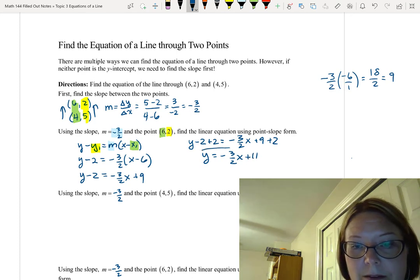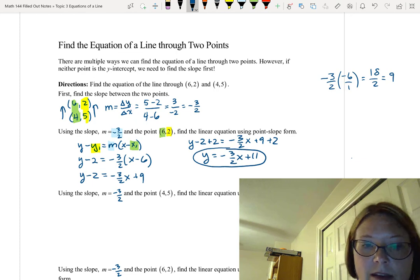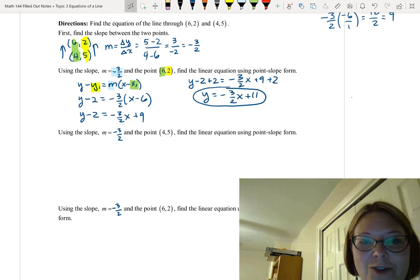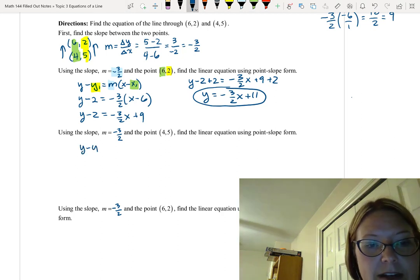We found the equation of the line. Now we're going to go through the same process just using that other point. Instead of (6,2), we're going to do it with (4,5) instead.